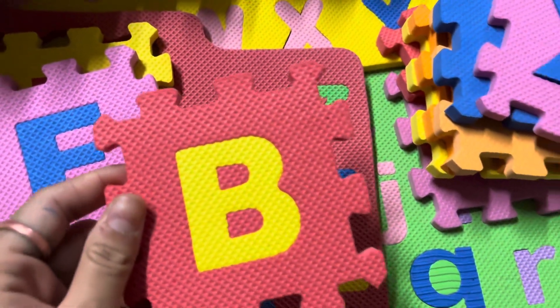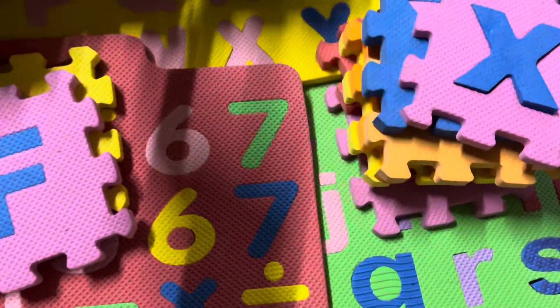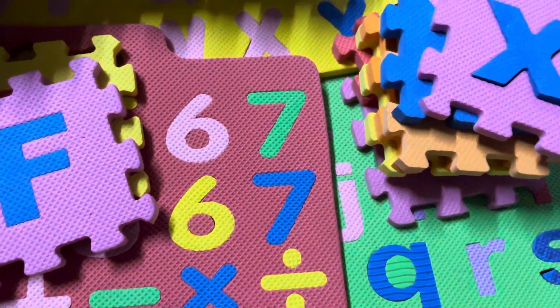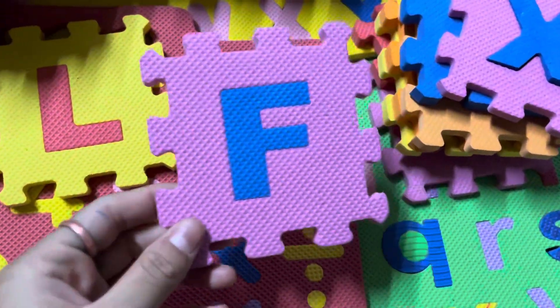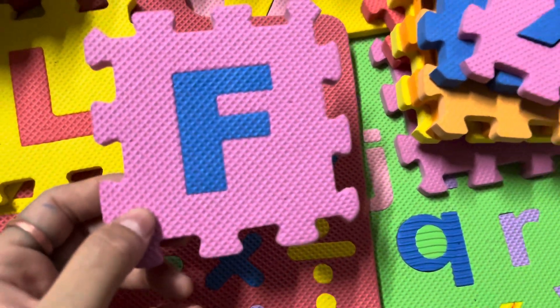Next is B. B for boy and B for basket. The next letter is letter F. F for fish and F for frog.